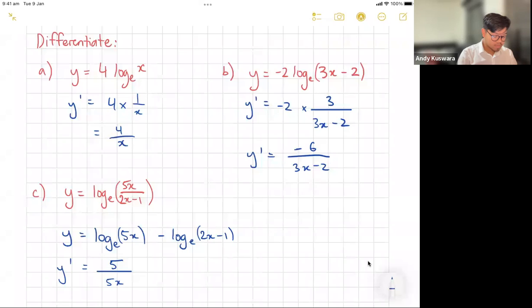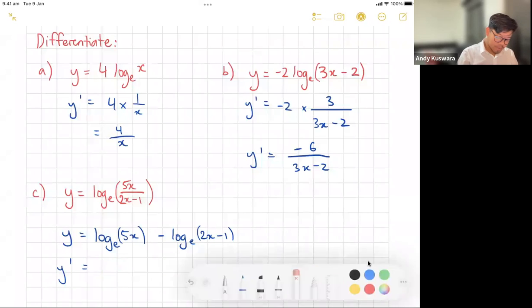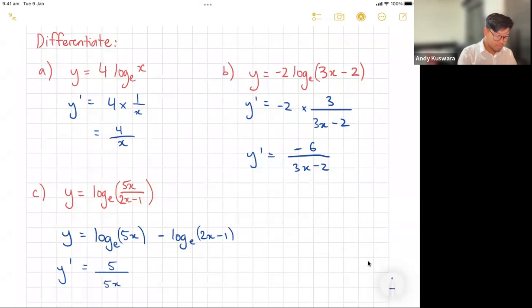So it's going to be derivative over original, which I think is correct, 5 over 5x. Yeah, it is. It's the derivative, it's f'(x) over f(x), so 5 over 5x minus 2 over 2x - 1.